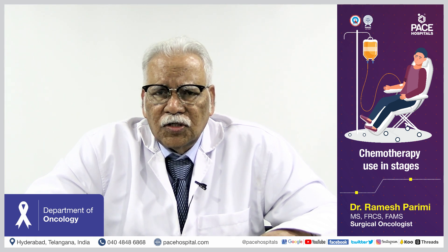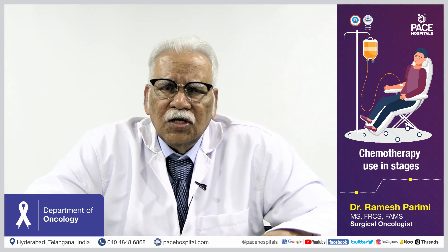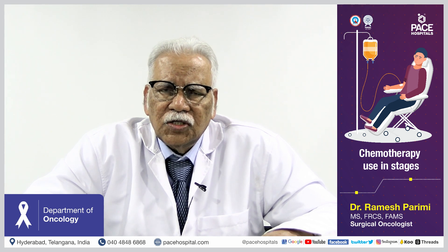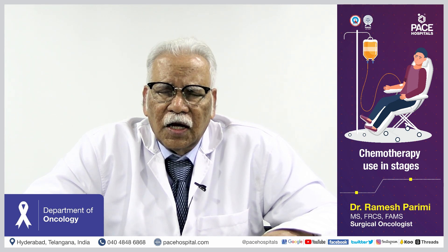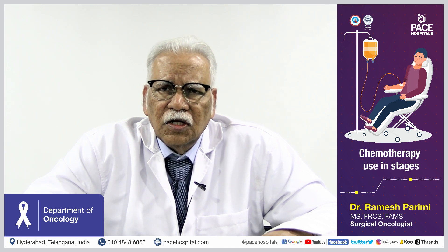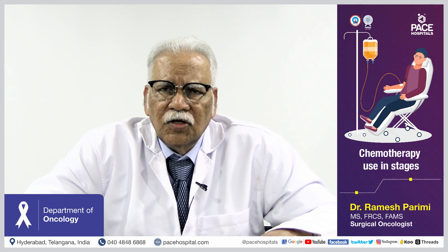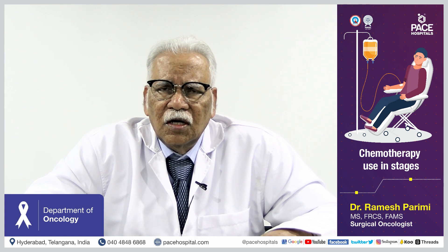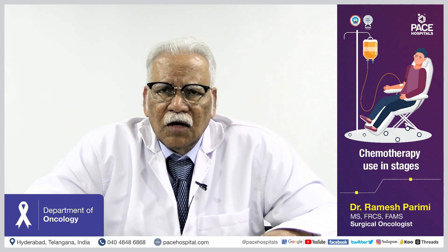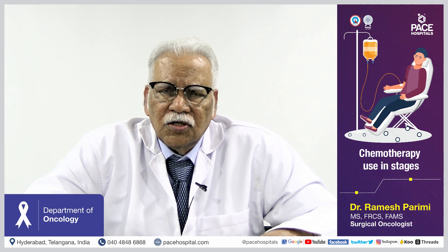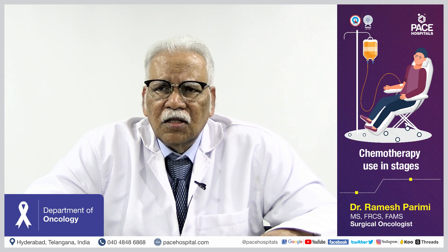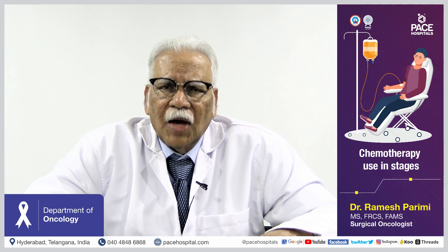In tumors where dissemination is very extensive, including solid tumors like breast cancer or colon cancer at stage 3 or stage 4, where the disease has spread to the lungs, bone, brain, or multiple sites and surgery is not feasible, radiotherapy cannot be given to the various parts affected. In such cases, chemotherapy is the only choice, and when the disease is extensive and the stage is higher, the aim of chemotherapy is only palliative.